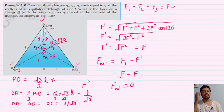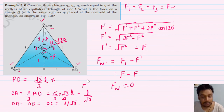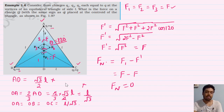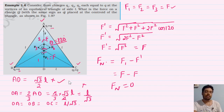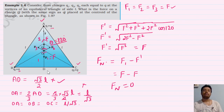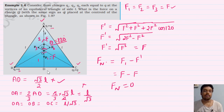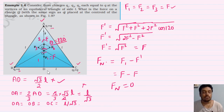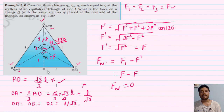मैंने यह इसलिए बताया क्योंकि कई बार question में values दी रहती हैं। याद रखो: equilateral triangle में median की length = (√3/2)L, और centroid 2:1 ratio में divide करता है। तो charge Q पर net force = 0, और Q equilibrium में रहेगा।